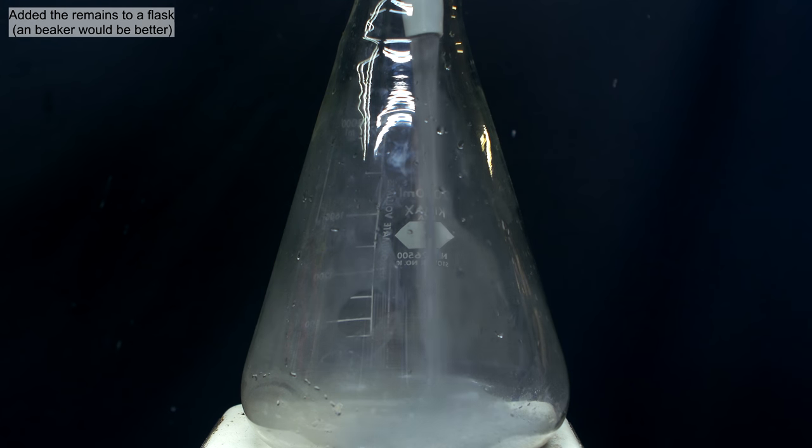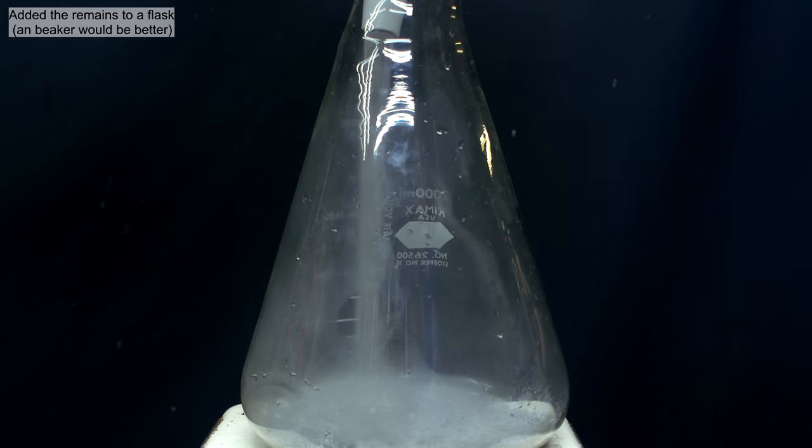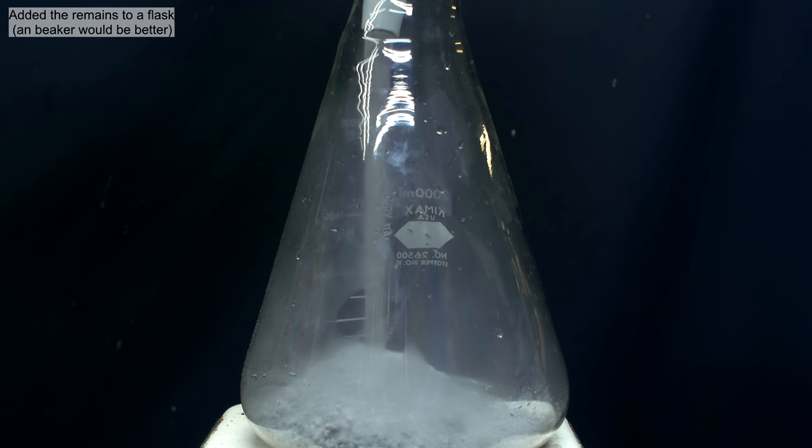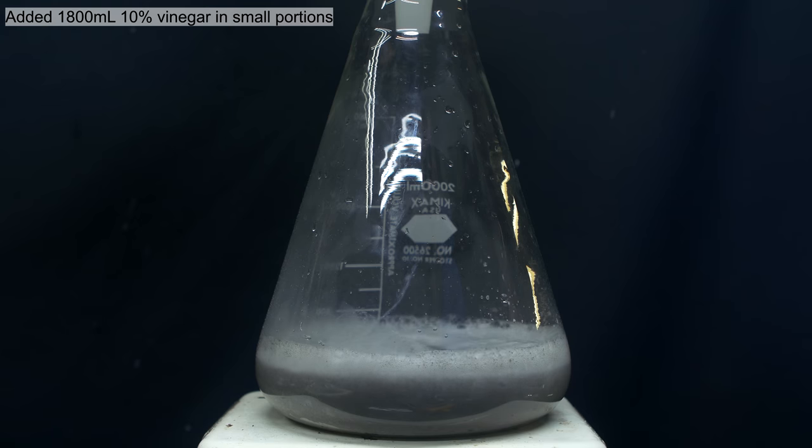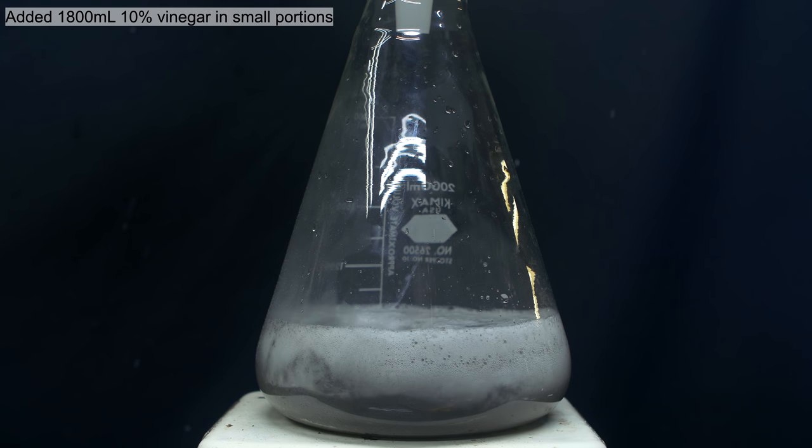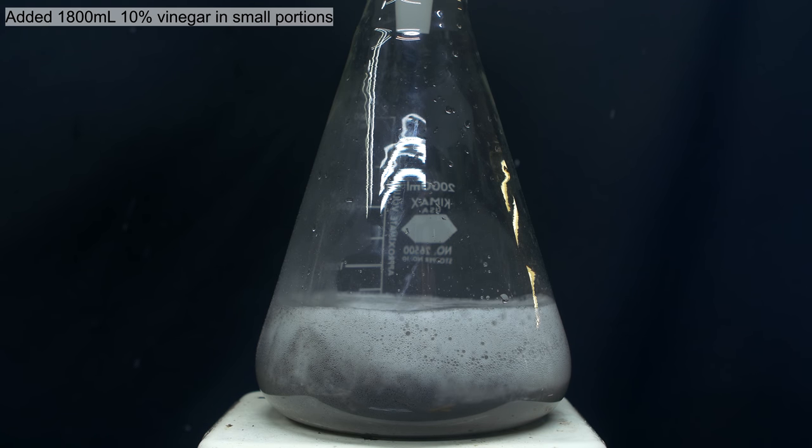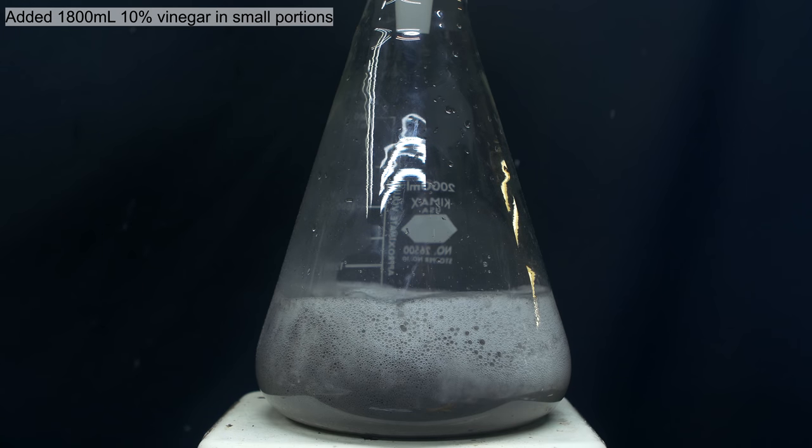So now we proceed on in the exact same way we did for the eggshell video. Everything's added to a large Erlenmeyer flask. On top of the calcium carbonate, we slowly add in about 1800 milliliters of 10% vinegar. I added the vinegar in small portions because if it's added all at once, it would pretty easily foam out of the flask.